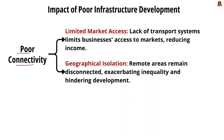The next drawback is poor connectivity. Without proper roads, railways, and transport systems, it is very hard for agricultural producers to access local and national markets, reducing their competitiveness and income. Limited market access is a major drawback of poor infrastructure. The next is geographical isolation — remote areas remain disconnected, leaving residents without access to essential services like healthcare and education, disproportionately affecting weaker sections of the population.